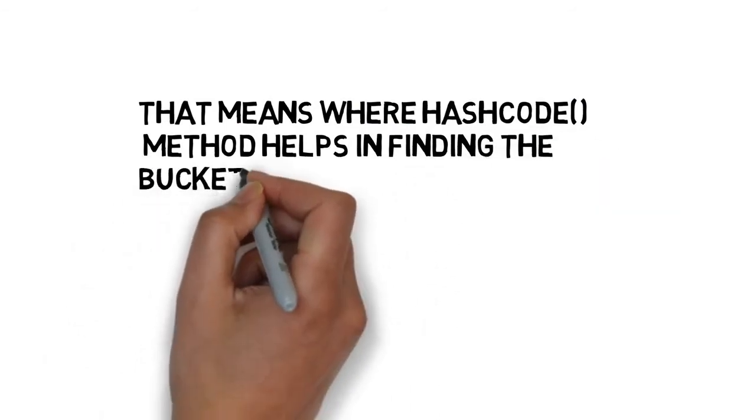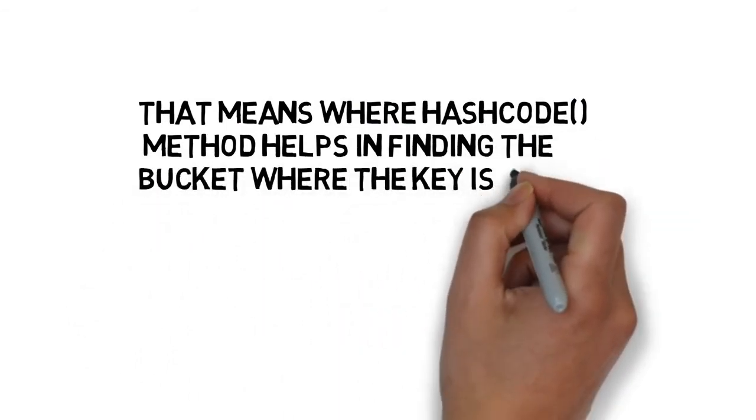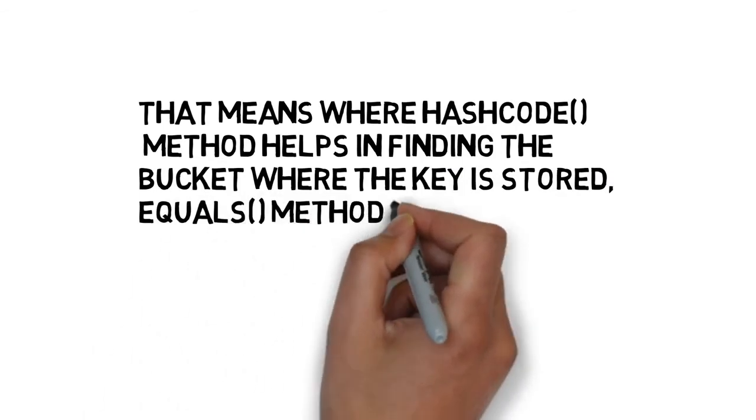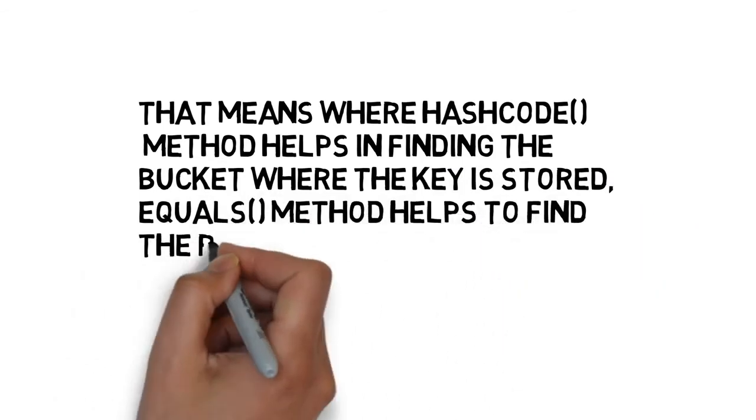That means where hash code method helps in finding the bucket where the key is stored, the equals method helps to find the right key, as there can be more than one key value pair stored in a single bucket.